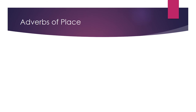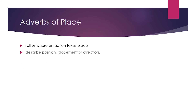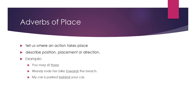Second is adverb of place. It tells us where an action takes place and also describes position, placement, or direction. For example: You may sit there. Wendy rode her bike towards the beach. My car is placed behind your car. The underlined words are adverbs of place — there, towards, and behind indicate position or direction.